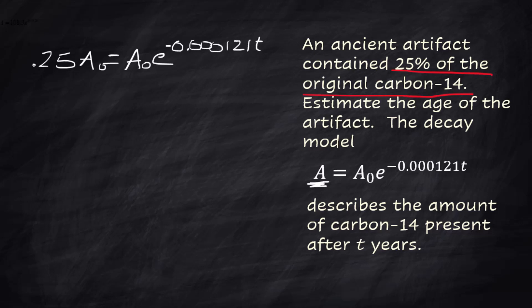You can see that the next move here is to divide both sides by A sub 0 because that just gets rid of one of the terms that's on both sides so that'll cancel and that'll cancel. So we now have 0.25 equals e to the negative 0.000121t.